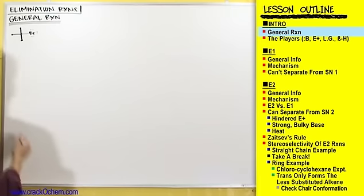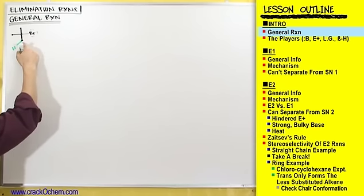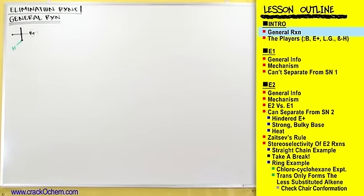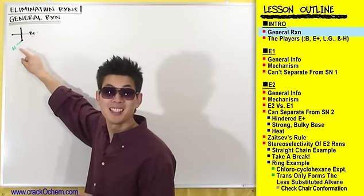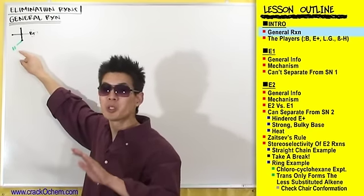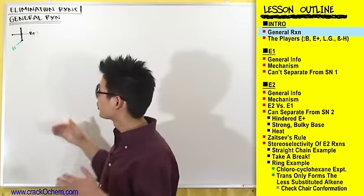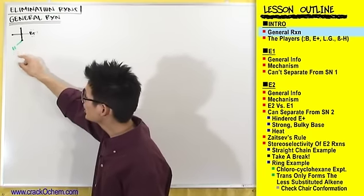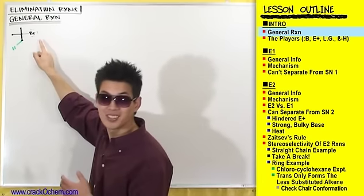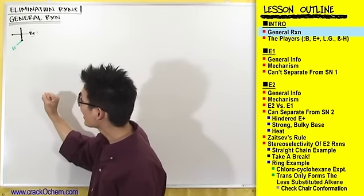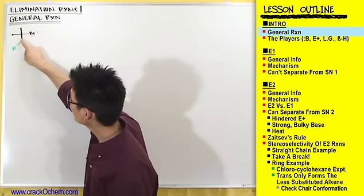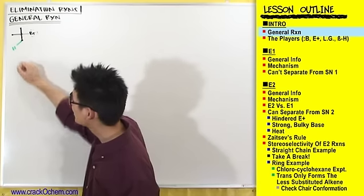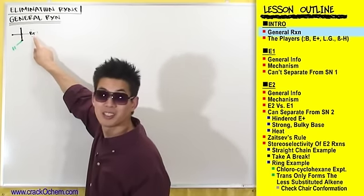Draw in one of the hydrogens on this carbon right here. There are three hydrogens coming off of this carbon, but just draw one. This hydrogen is special — it's known as a beta hydrogen. We're going to talk about it in detail in just a minute. For right now, understand that this beta hydrogen is going to get eliminated; it's going to get ripped off of the alkyl halide. This is why we call this an elimination reaction: we eliminate a hydrogen, use those electrons to form a double bond, and kick off a leaving group.